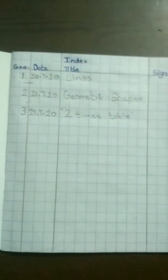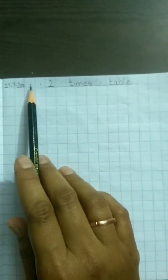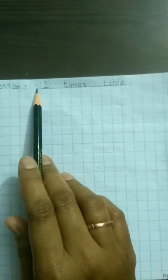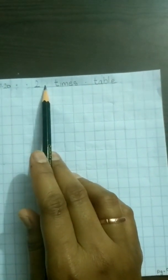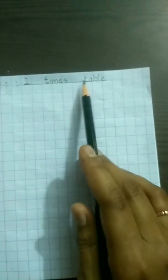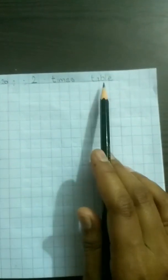So now we will be writing the table of 2. When we turn over to the new topic, we will take a new page and write today's date: 27.7.20, and then put 2 dots. Wherever there is a dot it's a blank box. So the heading is: number 2, times (t-i-m-e-s), table (t-a-b-l-e) — 2 times table. This is the heading of our topic.